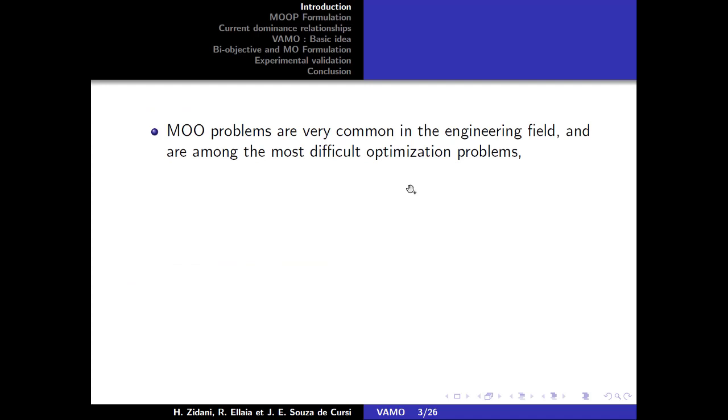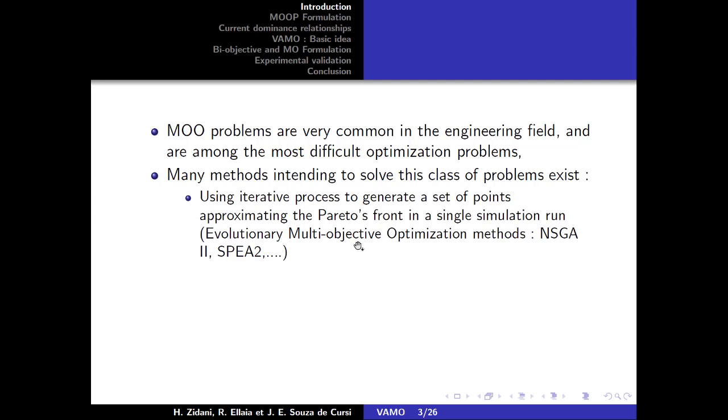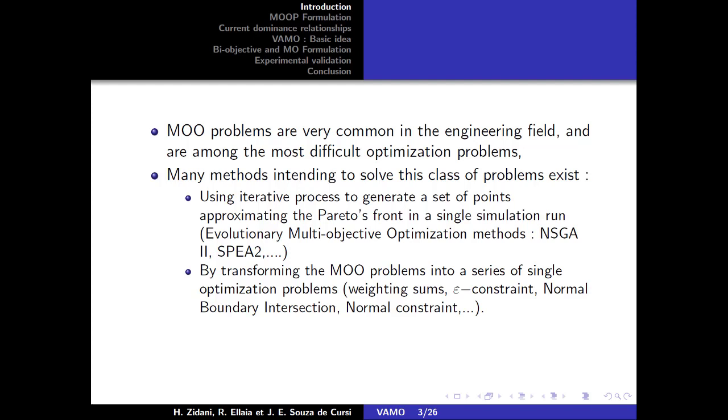Multi-objective optimization problems are common in engineering design. In this field, we might be brought to some of the hardest optimization problems which arise in many real-world applications. There exist a lot of methods intended to solve this class of problems, most of which use an iterative process to generate a set of points approximating the Pareto front either in a singular simulation run or by transforming the multi-objective problem into a series of single optimization problems.